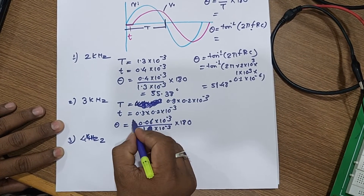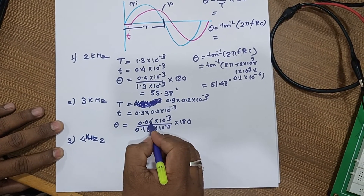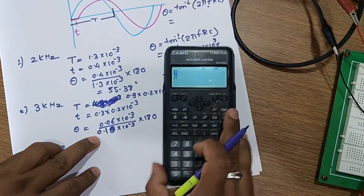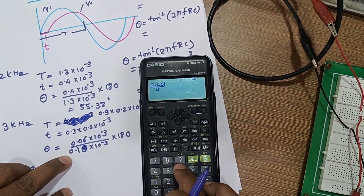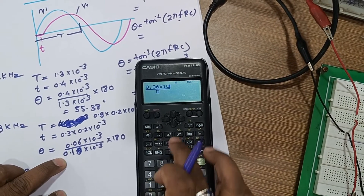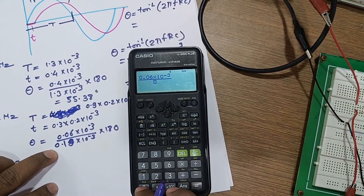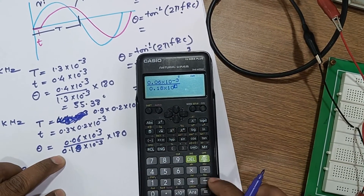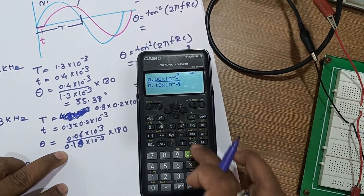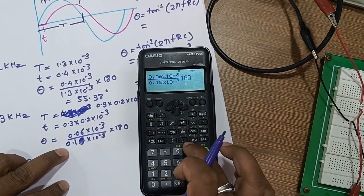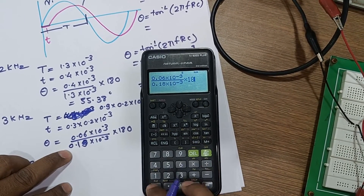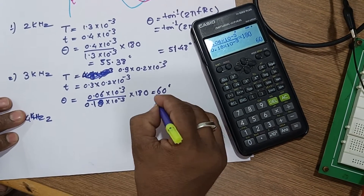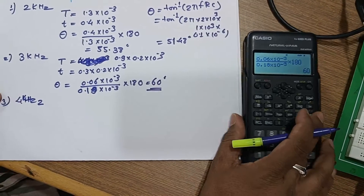So theta equals small t upon capital T: 0.06 × 10⁻³ upon 0.18 × 10⁻³ into 180. The result is 60 degrees. This is the observed value for 3 kilohertz.